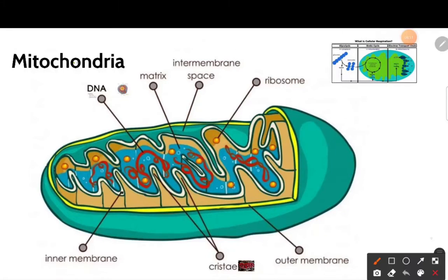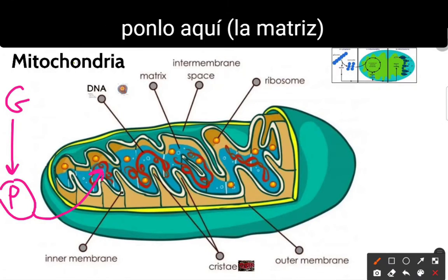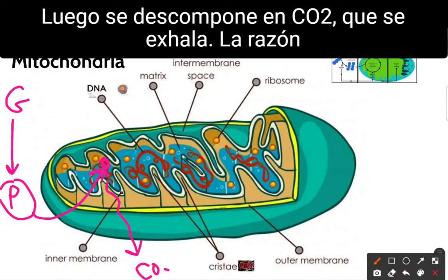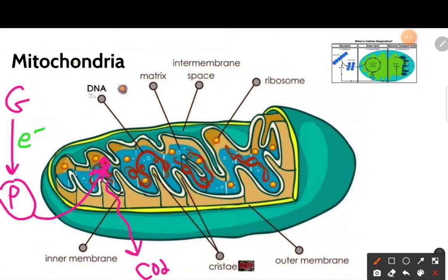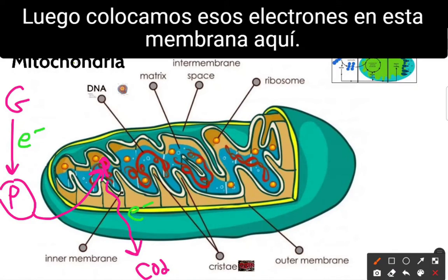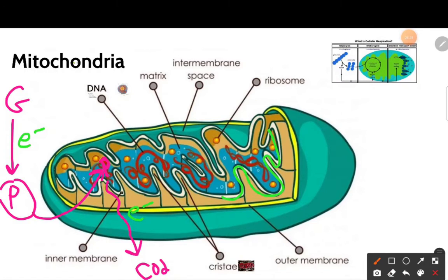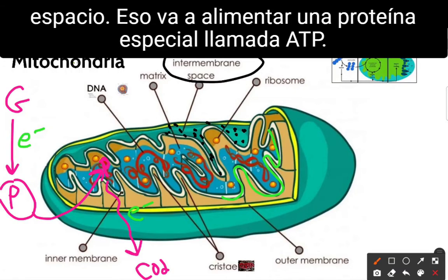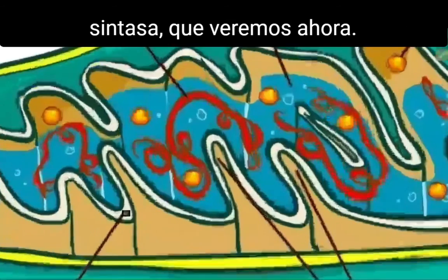To recap: glycolysis happens in the cytoplasm where pyruvate is made. Then we take that pyruvate into the mitochondria matrix, where it is broken down into CO2, which is exhaled. The reason we do all this is to get electrons, which we put on the inner membrane. That membrane becomes negative, causing hydrogens to fill the inner membrane space — and that powers a special protein called ATP synthase.